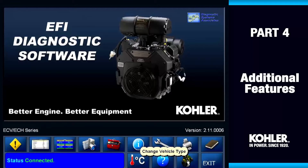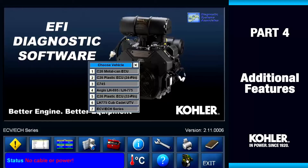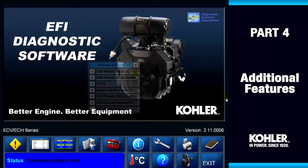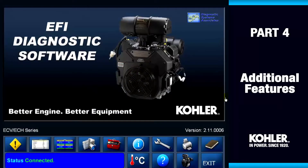The Engine Vehicle Selection button opens the list of engines you can diagnose with this software. Remember, choose the proper engine to be sure the proper diagnostic information is displayed. The last button is the Exit button — it closes the diagnostic system and shuts down communication to the vehicle.